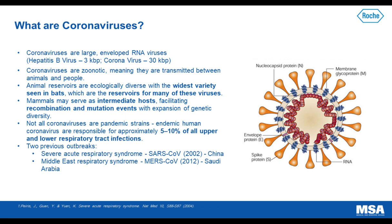These viruses are ubiquitous, meaning they infect many different mammals and have different intermediate hosts with various zoonotic transmission events. Not all coronaviruses are this pandemic strain. There are known coronaviruses that circulate in the human population, and these viruses account for approximately 5% to 10% of all upper and lower respiratory tract infections annually. There have been two notable zoonotic transmission events with coronaviruses.